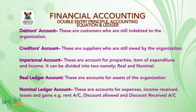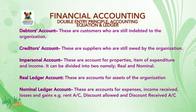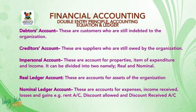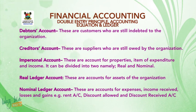Real ledger accounts are accounts for assets of the organization. Nominal ledger accounts are accounts for expenses, income received, losses and gains — for example, rent accounts, discount allowed, and discount received accounts.